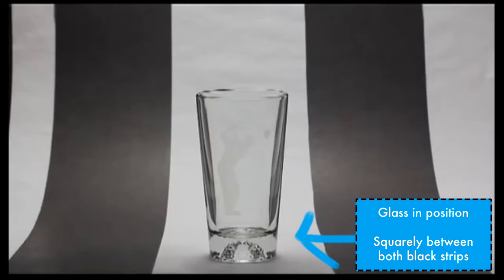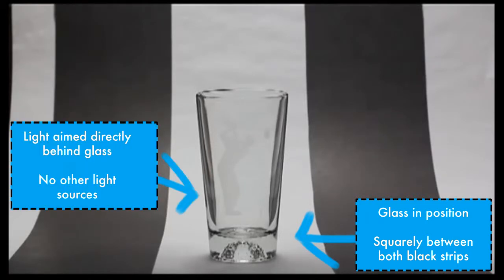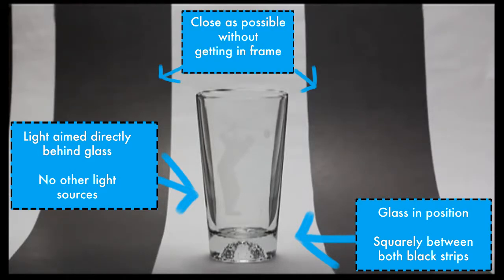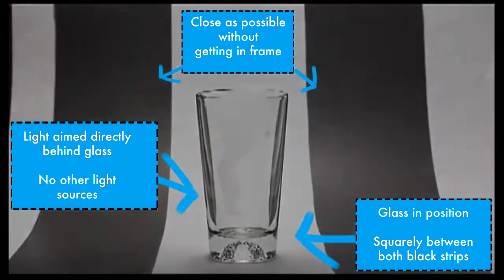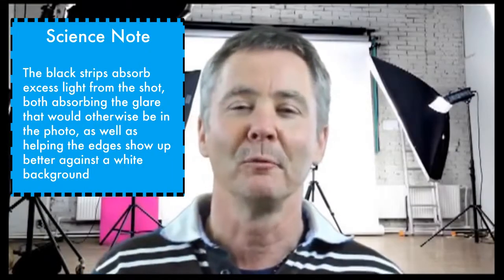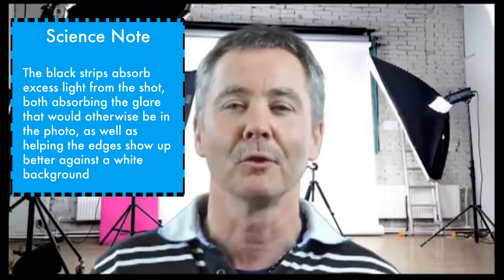So you need to place the glass in position making sure that the light is only coming from directly behind, and then cinch in the black strips on either side as tight as you can but making sure that they still stay outside of the frame. The black strips will make sure that the edges of the beer glass show up well.